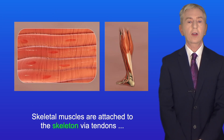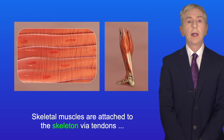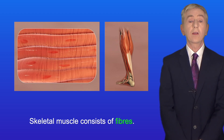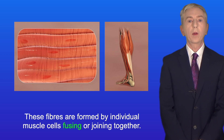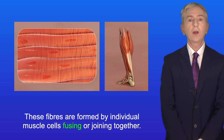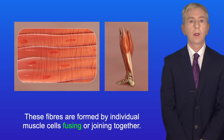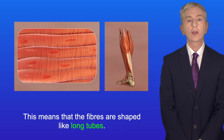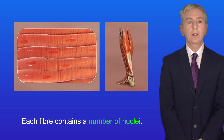Skeletal muscles are attached to the skeleton via tendons and are used in conscious or voluntary movement. Skeletal muscle consists of fibers, which are formed by individual muscle cells fusing or joining together. This means that the fibers are shaped like long tubes and each fiber contains a number of nuclei.